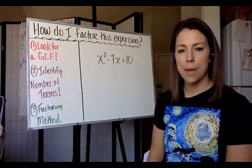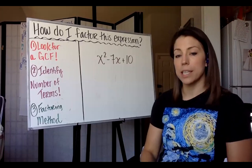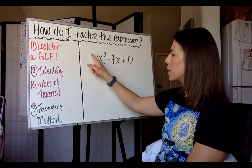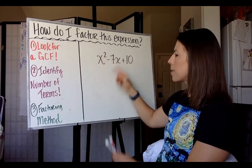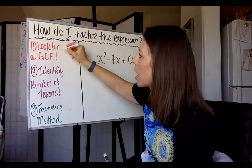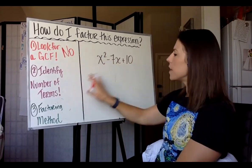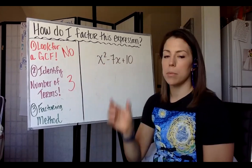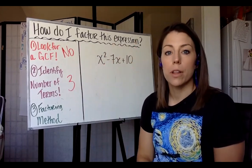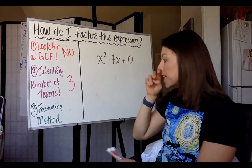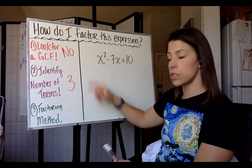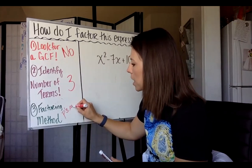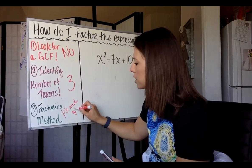Our second example is x squared minus seven x plus ten. First step: is there a GCF? There is no leading coefficient, and seven is a prime number, so there is no common factor to factor out. Identifying the number of terms — there are three, so in our flowchart we look in the middle column for trinomial factoring methods. This does not have a leading coefficient, which leads me to believe our factoring method will be P's and Q's.